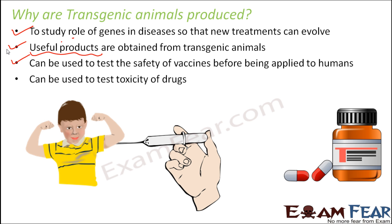Transgenic animals can also be used to test the toxicity of drugs. Basically, these transgenic animals are mostly used for testing — whether testing the effectiveness of drugs, how poisonous they are, what adverse effects they can have on human beings, or for testing the safety of vaccines, and for studying the cause of diseases and how they can be treated. Initial testing is done on transgenic animals for the safety of human beings, and that is the reason why transgenic animals are being produced.